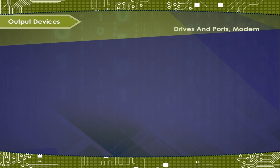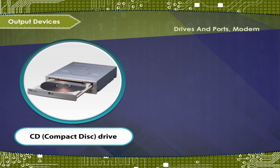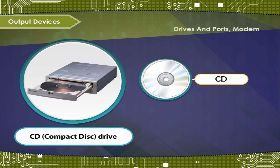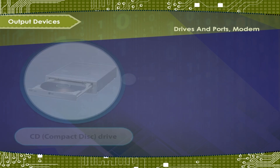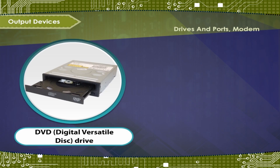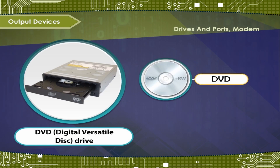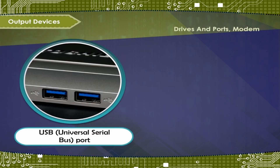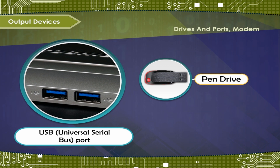Drives and Ports. CD — Compact Disk Drive: this device is used to read the contents of a CD. DVD — Digital Versatile Disk Drive: this device is used to read the contents of a DVD. USB — Universal Serial Bus Port: this device is used to connect a pen or flash drive or any USB device.